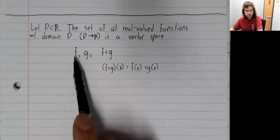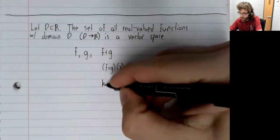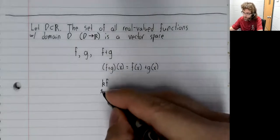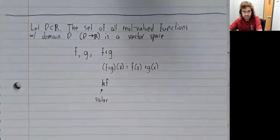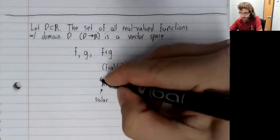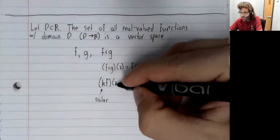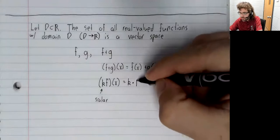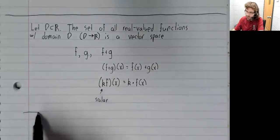And if we have a function f, we can define a new function kf for any scalar k. Again, we do this in the natural way: (kf)(x) equals k times f(x).